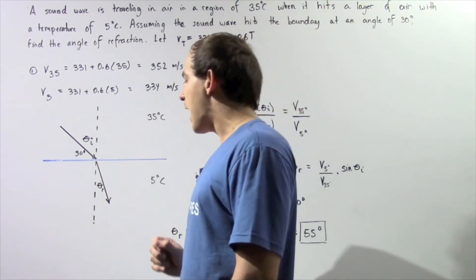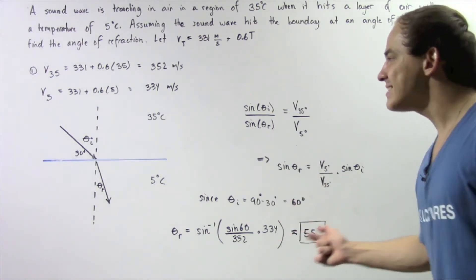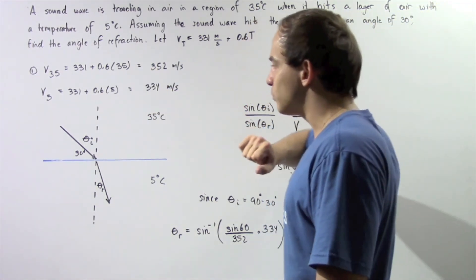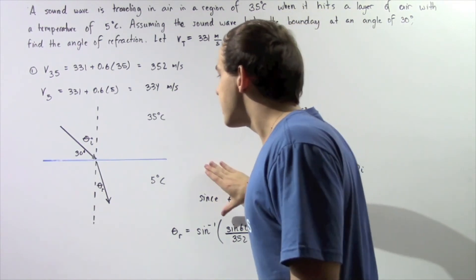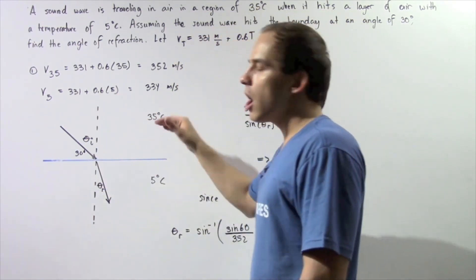So the angle of refraction is 52 degrees, and that makes sense because it's less than 60. That's exactly what we said it would be because the velocity in this region is less than the velocity in the upper region.